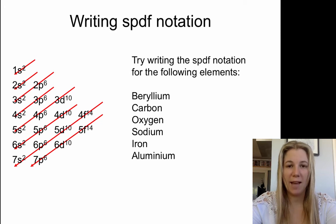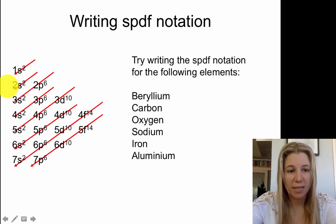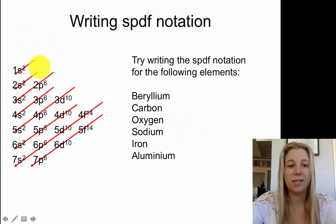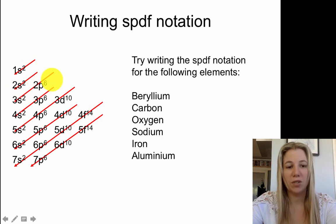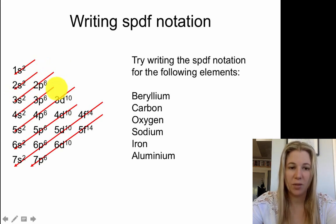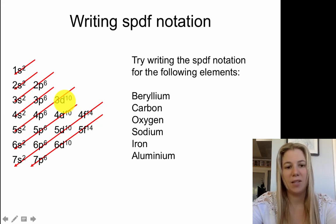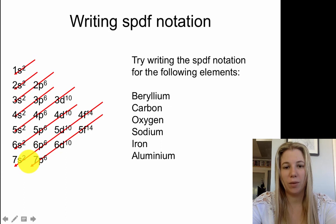What I'd like you to do is pause the video here and have a go at writing the SPDF notation for the following. Please be aware that you're actually following the diagonal lines. So this fills up first, then 2s2, then 2p6, 3s2, 3p6, 4s2, then 3d10. So if you can go following these diagonal lines, that will help you a lot. And the answers are on the next screen. So pause the video here, have a go, then check your answers.